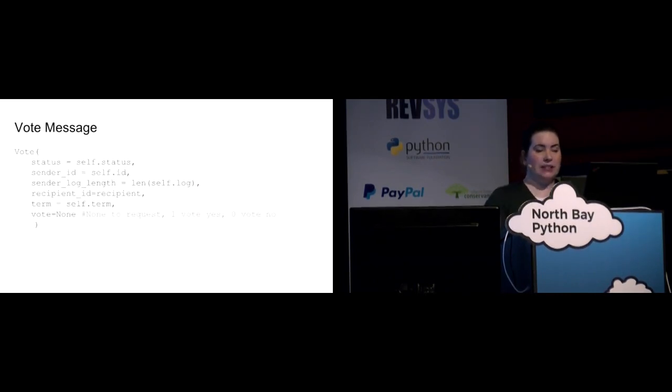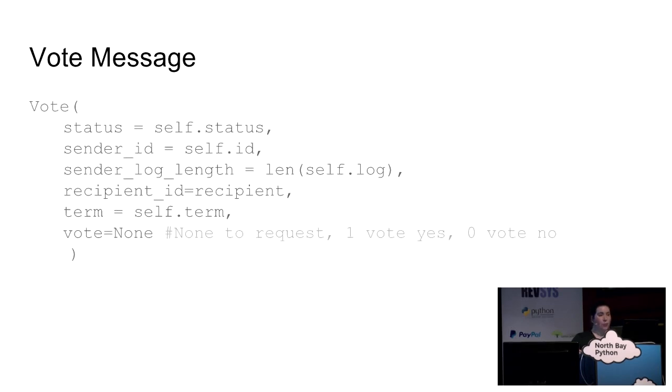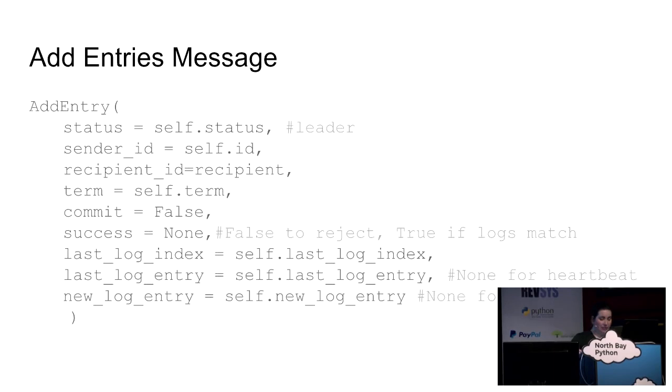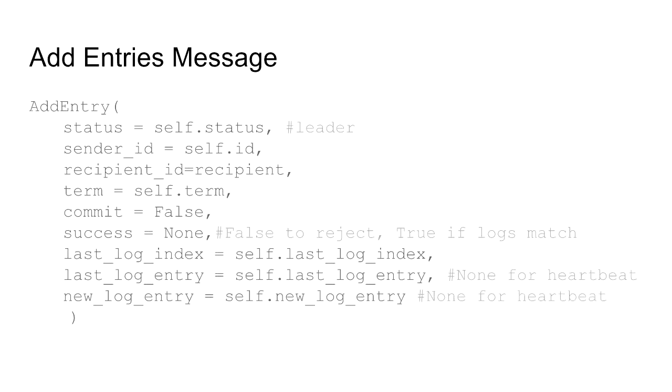So let's take a look at some of the messages in Raft. This is a vote message. It contains who it's from, who it's sent to, what their status is, whether they're a leader or a candidate, or a follower or a candidate, the length of their logs, what term they think it is, and the value for the vote. This is an add entries message, which contains who it's from, who it's sent to, what their status is, and we hope that they're a leader, what term they think it is, whether to commit or add to a provisional log, a success message that the follower can set in order to accept the entry when they respond to the leader, the index of the latest log entry, the last log entry, and the new log entry.